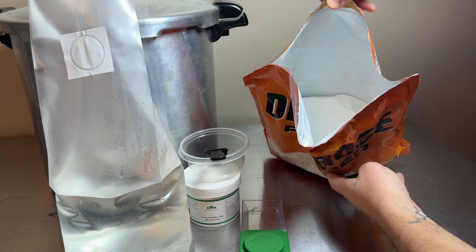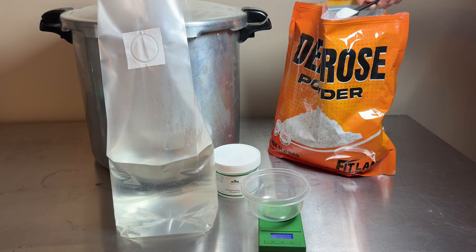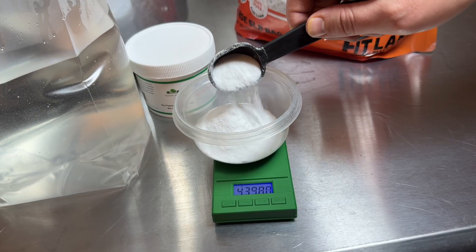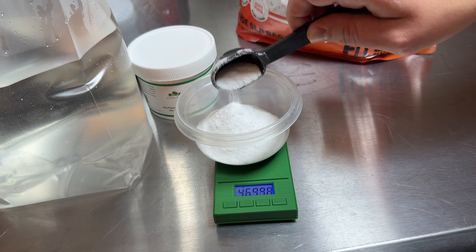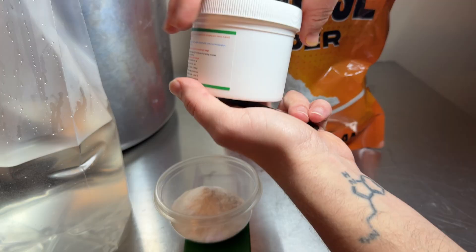To make the liquid culture media, I'm using dextrose powder and soy peptone. I weigh out 48 grams of dextrose powder and 4 grams of soy peptone. I also got these two ingredients from Amazon, so I'll leave those links in the description as well.